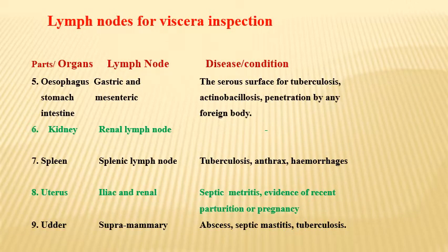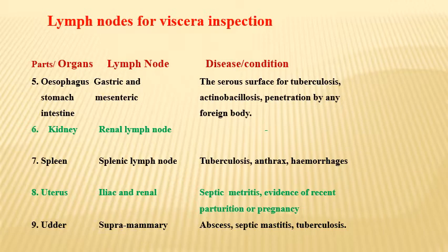Continuing the table: fifth, esophagus, stomach, and intestine — gastric and mesenteric lymph nodes; check serous surfaces for tuberculosis, actinobacillosis, or penetration by foreign body. Sixth, kidney — renal lymph nodes; check for inflammation and other changes. Seventh, spleen — splenic lymph nodes; check for tuberculosis, anthrax, and hemorrhages. Eighth, uterus — iliac and renal lymph nodes; check for septic metritis and evidence of recent parturition or pregnancy. Ninth, udder — supramammary lymph nodes; check for abscess, septic mastitis, and tuberculosis.